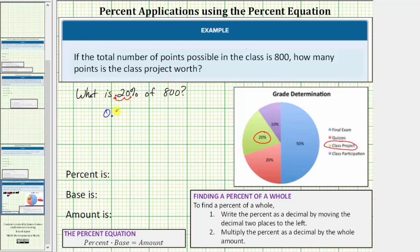So we have 0.2 times 800. This product will give us 20% of 800, which is equal to 160, which means the class project is worth 160 points.